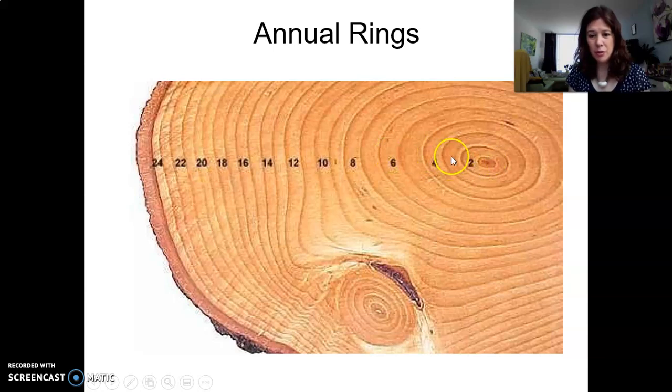And here you can see that it shows this is year one, this is year two, year three, this is year four, then year five, year six, year seven is this one, year eight, and so forth. So you can see that this tree is 24 years old and then it was cut down.